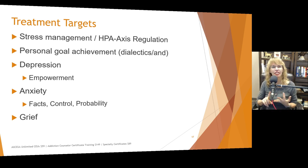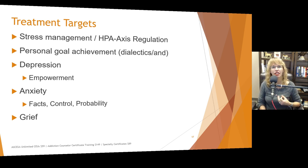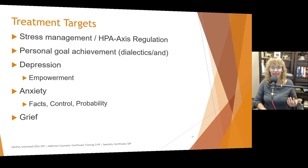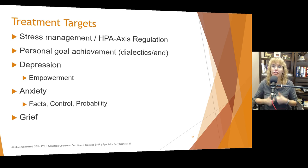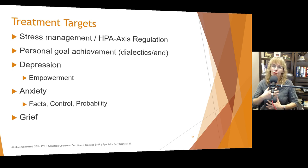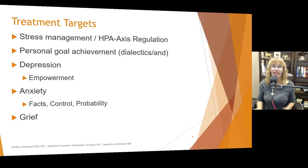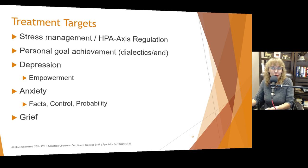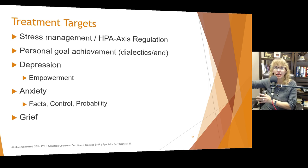For anxiety, going back to that facts, control, and probability format — when clients start having anxiety, encourage them to recognize it as how they feel, accept it non-judgmentally, and then say: nurturing this anxiety is going to do nothing but rev up my HPA axis and increase my blood sugar. Anxiety is the body's way of signaling a possible threat. Is there actually a threat right now in this context? What parts of this situation do I have control over? What is the probability that what I'm worried about will actually come true?